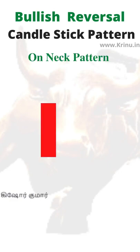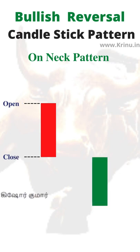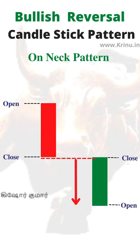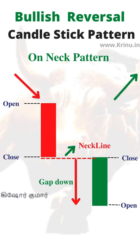The On Neck pattern is a bullish reversal pattern. The first candle is a bearish candle that closes below the open price, and the second one is a bullish candle that closes above the open price. For both candles, the close price is almost the same, and the second candle opens gap down compared to the previous bearish candle. This is called the horizontal neckline, where both closes are almost equal, which signals a bullish uptrend.